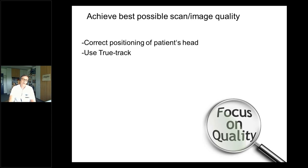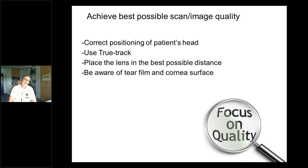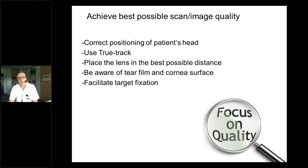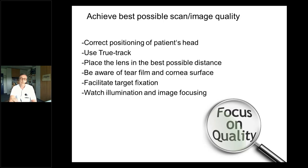Target fixation can be challenging in one-eyed patients — patience is required. Illumination is an issue for good image quality, as is image focusing. The patient needs correct positioning, correct scan positioning, especially when doing free circle scans centered on the optic disc. Always be aware of refractive errors, especially astigmatism — sometimes you need astigmatic correction glasses to get better image quality. Always check the segmentation with the B-scan.